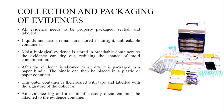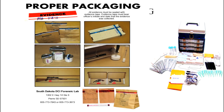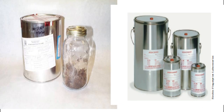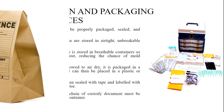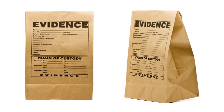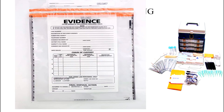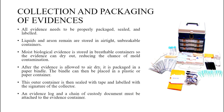Once evidence is found, collection and packaging is the next step. All evidence needs to be properly packaged, sealed, and labeled. Liquids and arson remains are stored in airtight unbreakable containers. Moist biological evidence is stored in breathable containers so it can dry out, reducing mold contamination. After air drying, evidence is packaged in a paper bundle, which can then be placed in a plastic or paper container, sealed with tape and labeled with the collector's signature.